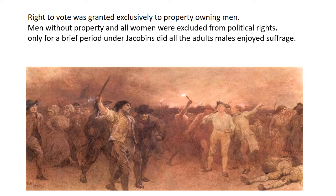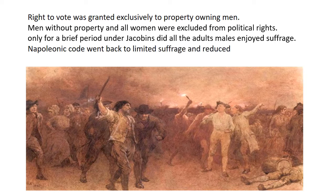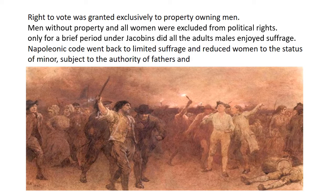Only for a brief period under the Jacobins did all adult males enjoy suffrage. During Napoleon's rule, his code went back to limited suffrage and reduced women to the status of minors, subject to the authority of fathers and husbands — meaning women had restricted rights, exercised only under the guidance of their fathers and husbands.